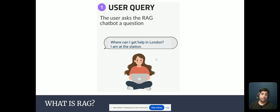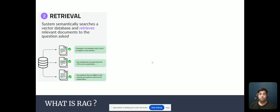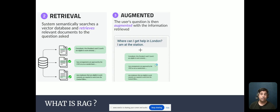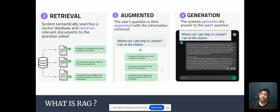If you're new to RAG, let me provide a quick overview. RAG is retrieval augmented generation. You might have an initial user query such as 'where can I get help in London?' The first and most important step is the retrieval step, where you do a semantic search through a vector database and retrieve relevant documents based on that query. The augmented piece is where the original query is combined with information from the vector database and provided as context to the language model, allowing it to produce the generation piece and respond to the original question.